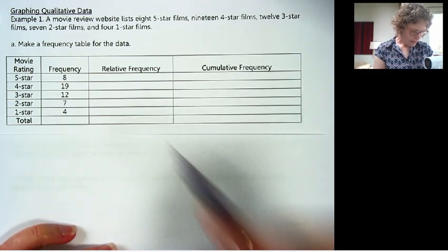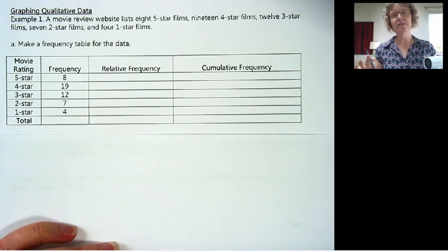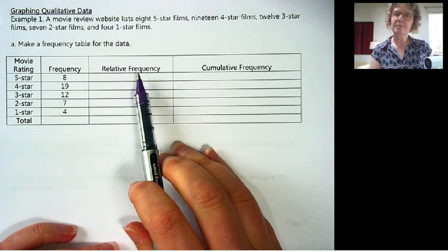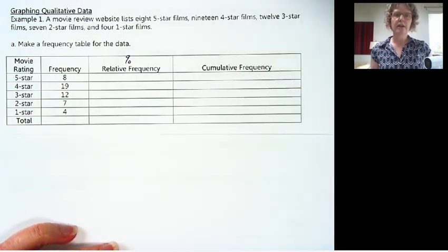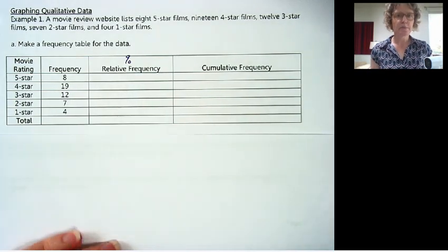Great, we can tell that 19 were 4-star films, but it's a little hard to know relatively how much is that. So a relative frequency is a percentage, and that really helps us to understand better how many of the films were 4-star films.